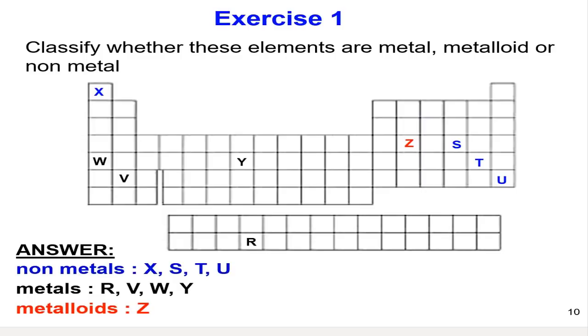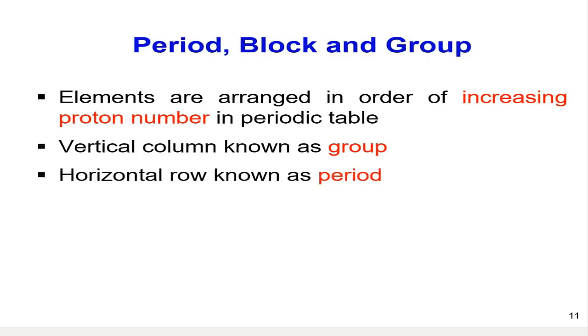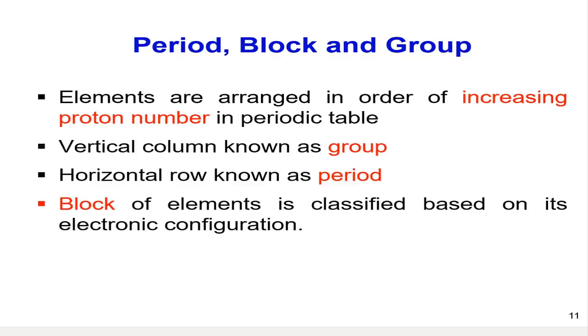Before we go into further details, let's familiarize ourselves with the term period, block, and group. The vertical columns in the periodic table are known as group, while the horizontal rows of elements which are arranged in the order of the increasing proton numbers are called period. And last but not least, the block of elements are classified based on its electronic configuration.